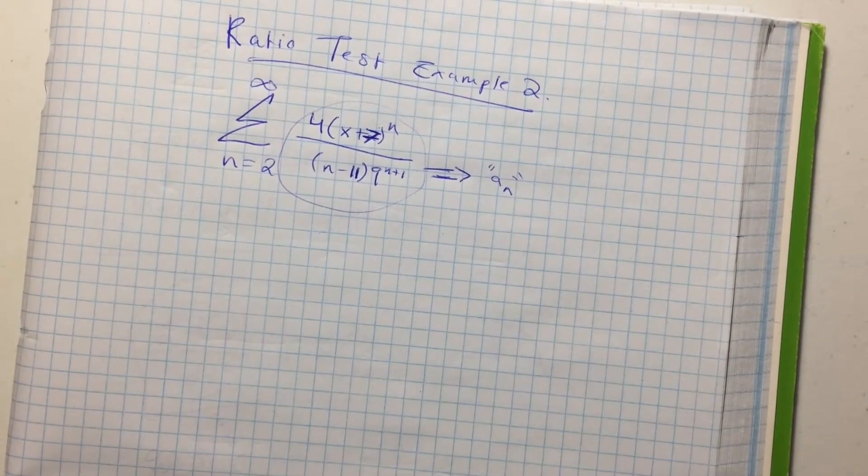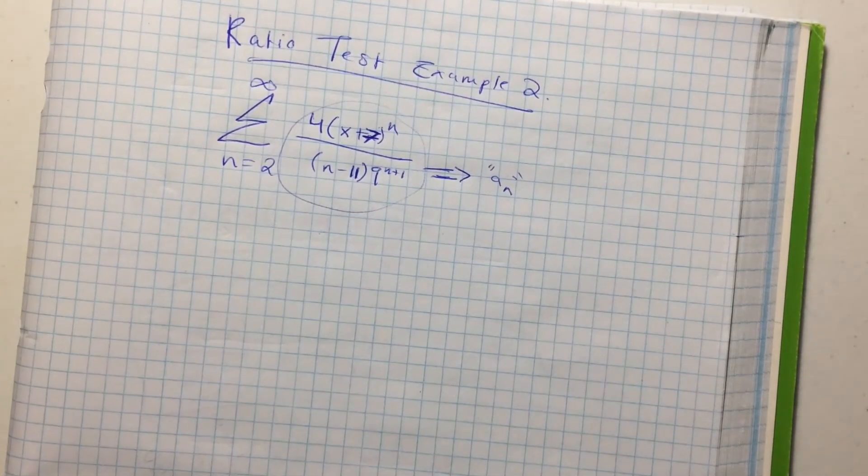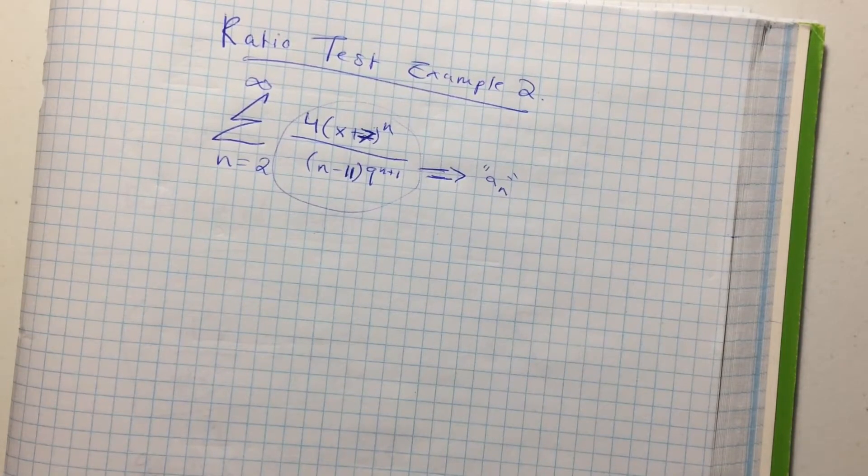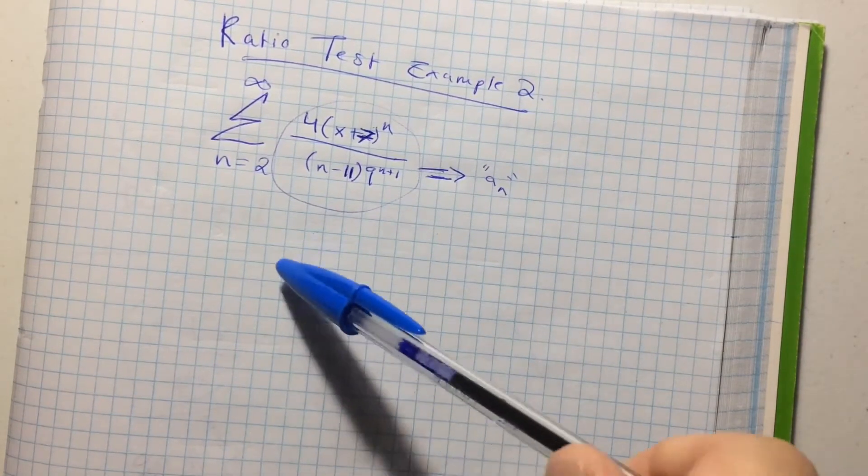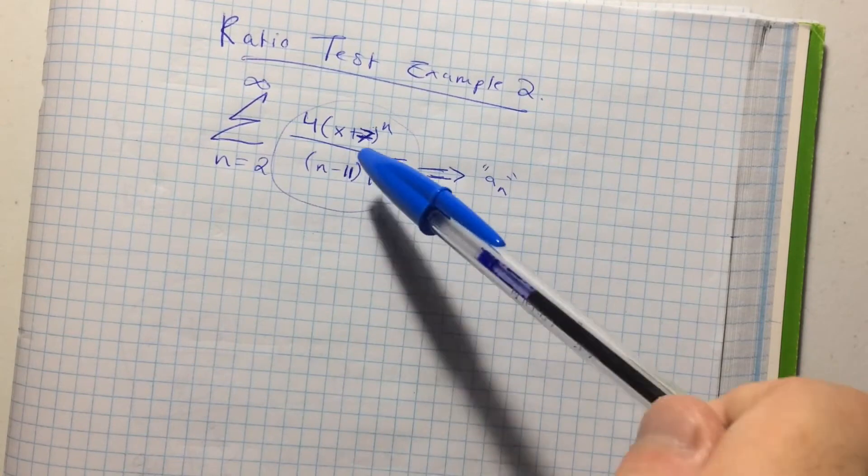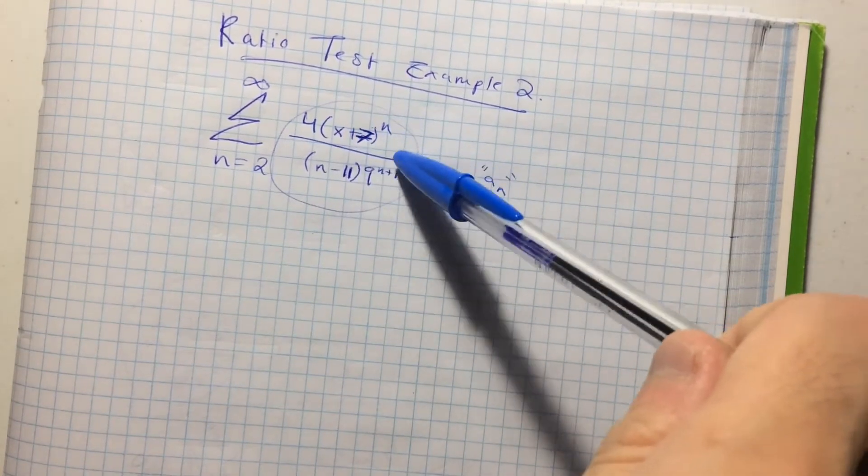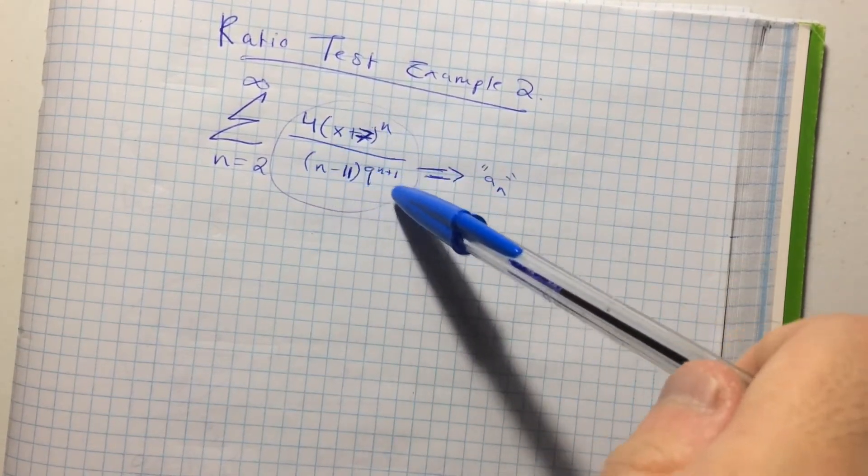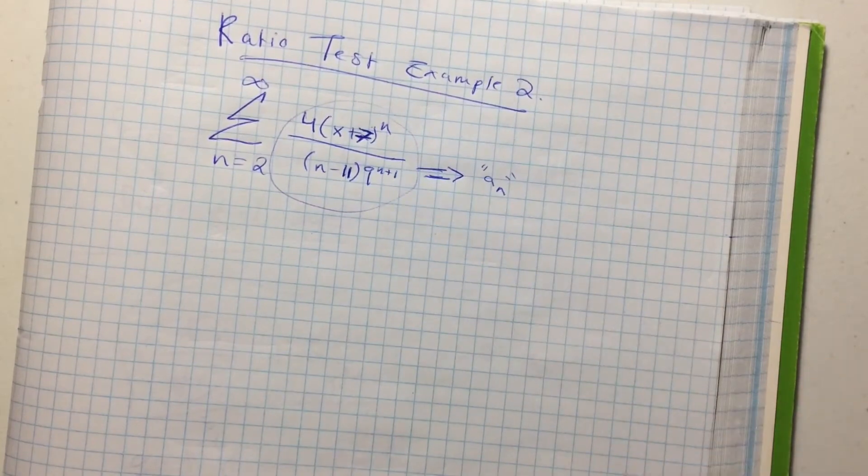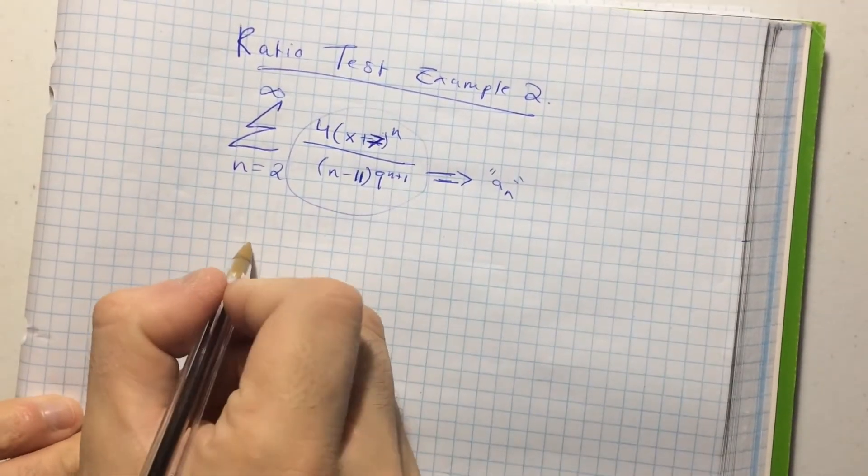Alright, so this is a video of the power series. So I've got the power series and I'm using the ratio test to find the open interval of convergence.